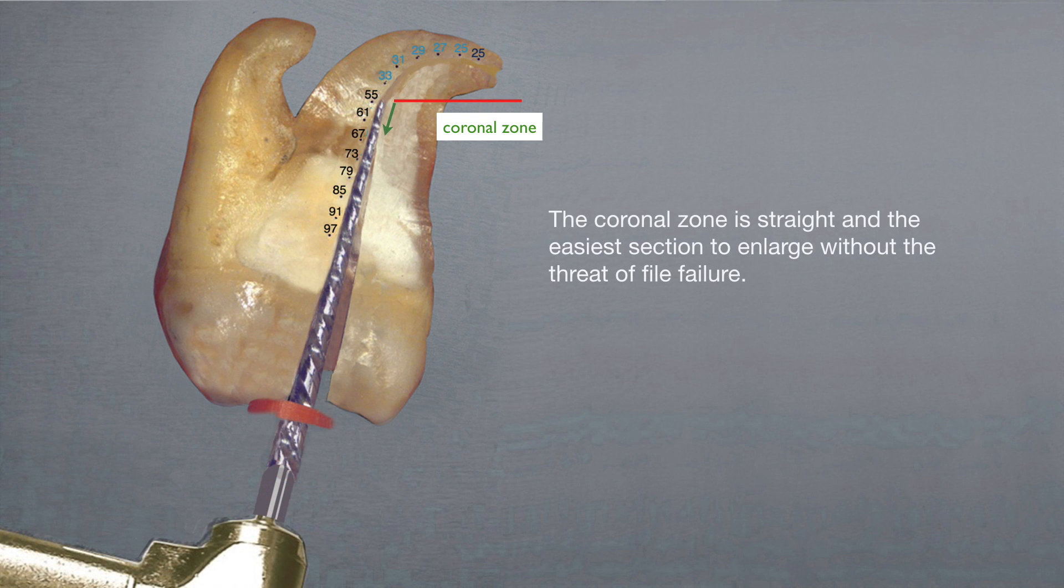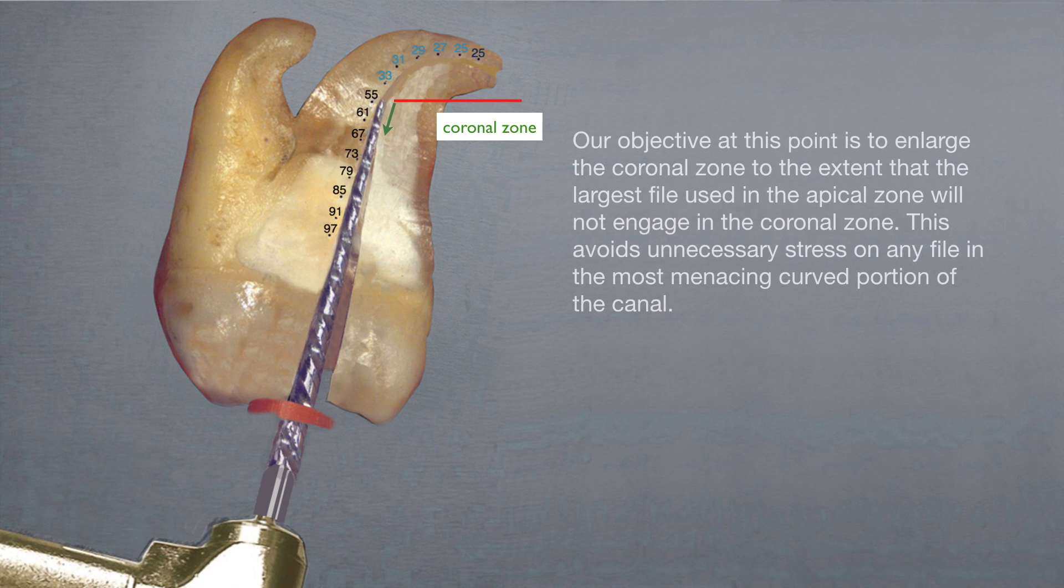The coronal zone is straight and the easiest section to enlarge without the threat of file failure. Our objective at this point is to enlarge the coronal zone to the extent that the largest file used in the apical zone will not engage in the coronal zone. This avoids unnecessary stress on any file in the most menacing curved portion of the canal.